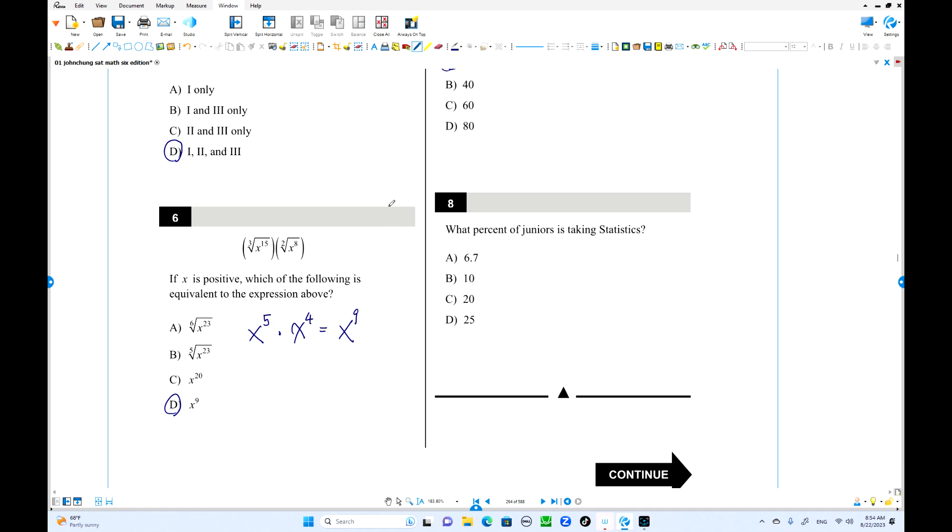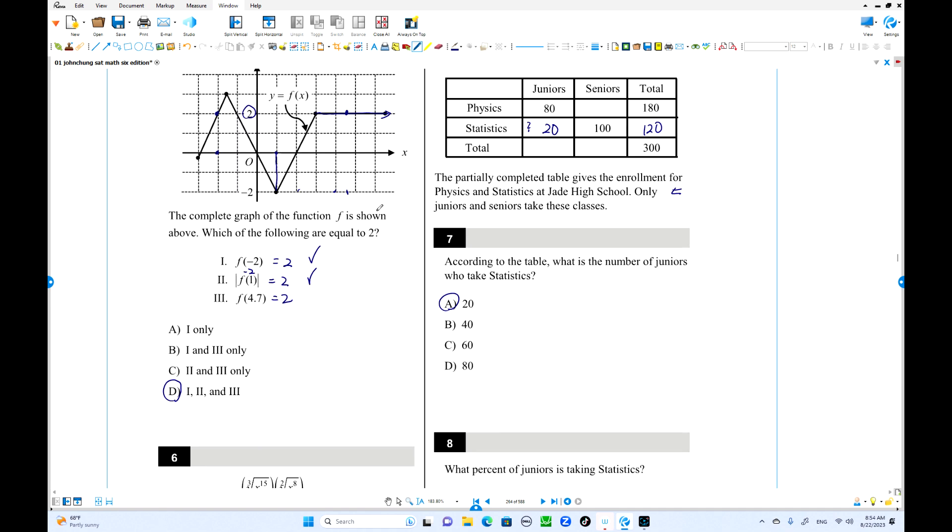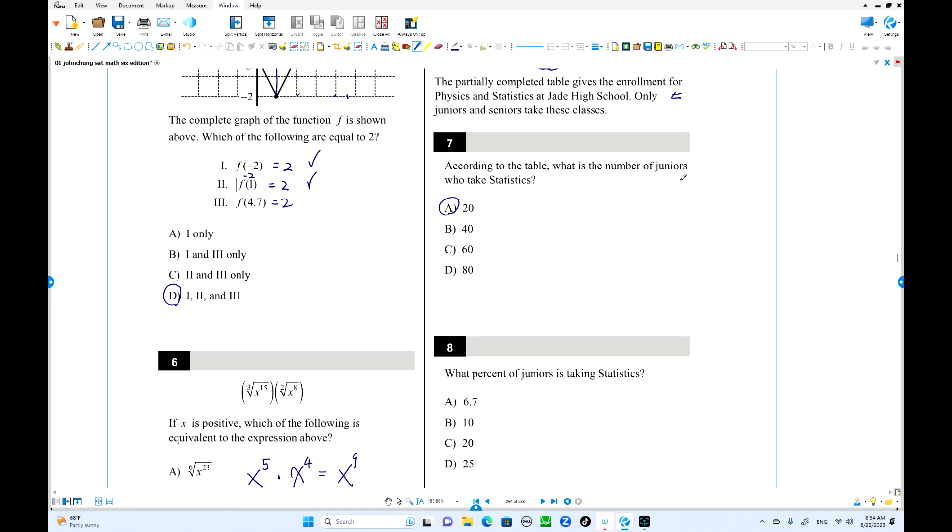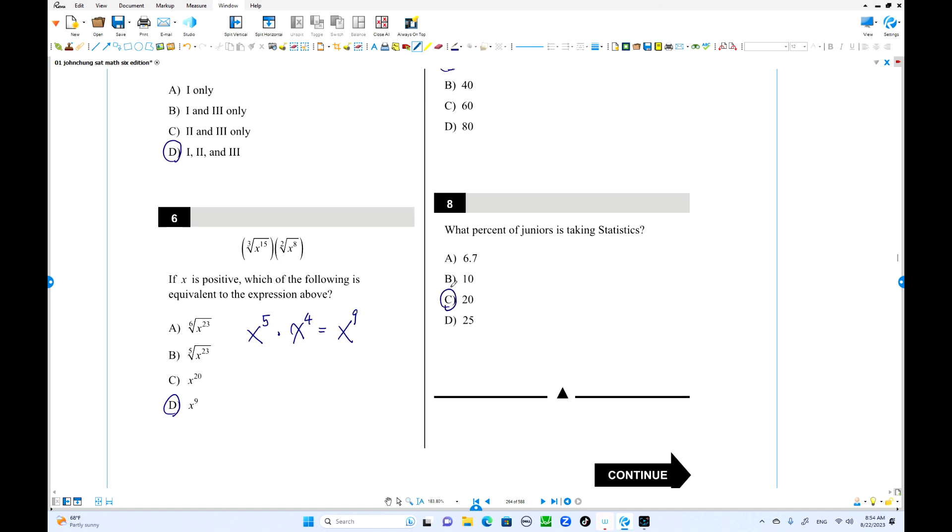Number 8. What percent of juniors is taking statistics? Out of juniors over here, 100. This is with a conditional probability. So this is not sample space. Out of this number, 20 out of 100 is 20%.